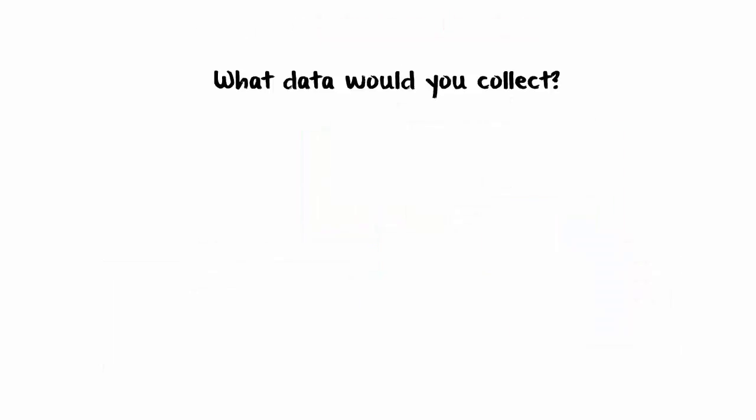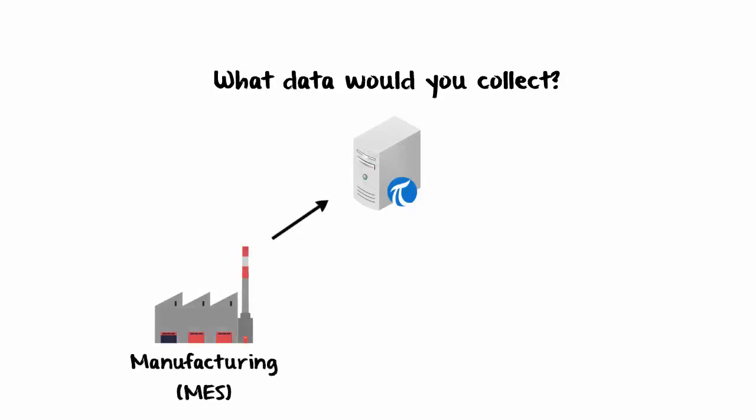So what kind of data would you want to collect from a relational database? We know that PI interfaces collect time series data and send it to the PI Data Archive, so really we could collect any data from an RDBMS where the time is important. Here are some common examples. You can collect data from a manufacturing execution system — for example, you could collect the time where specific batches of product were produced, like the batches of dairy products from the tables we saw above.